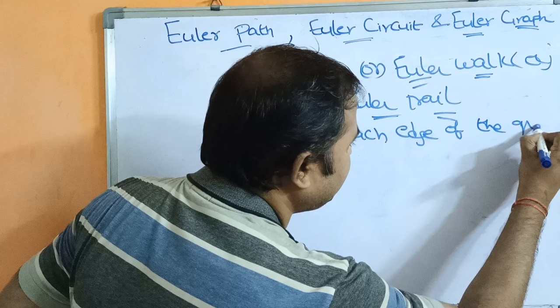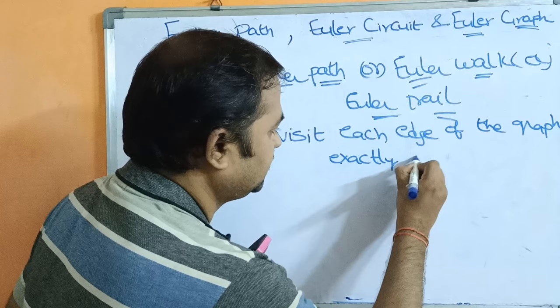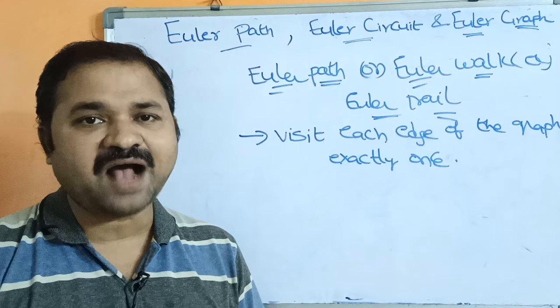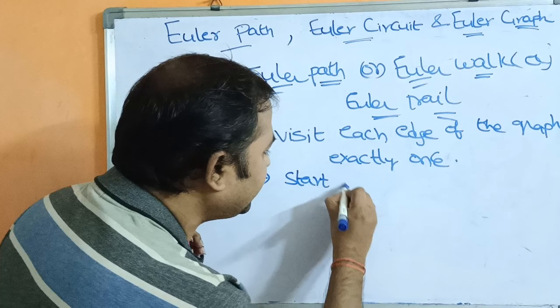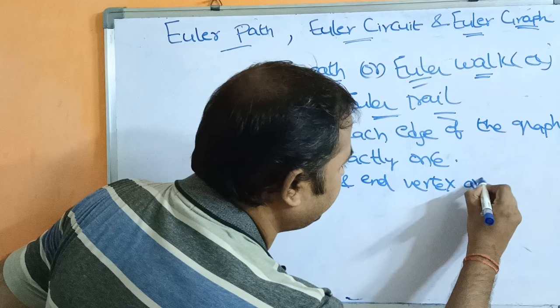We have to visit each edge of the graph exactly once. If the graph contains five edges, then we have to visit all five edges exactly once. In Euler path, the start and end vertex are different.